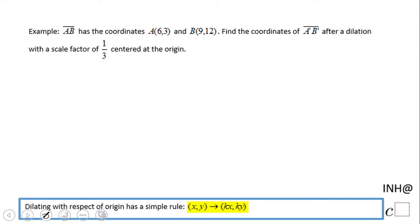Welcome, welcome. Here I need help at C Square. In this example, we're going to look at how to dilate a segment AB by a scale factor of 1 over 3, and we're going to use this formula you see down here on the bottom for how we're going to do that.